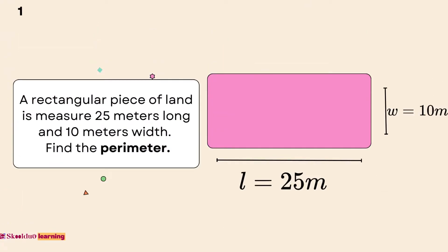C. Perimeter of a regular hexagon is equal to 3 plus 2 plus 2 plus 4 plus 5 plus 2, which is equal to 18 cm.